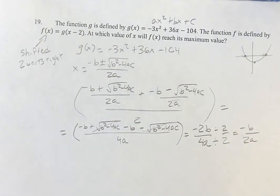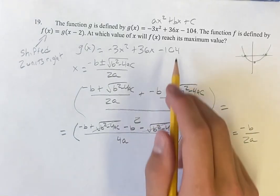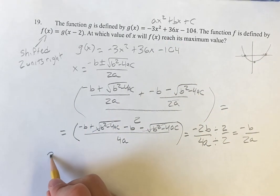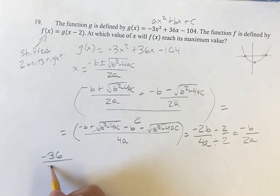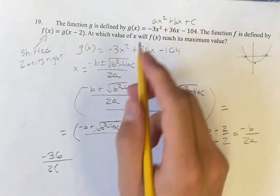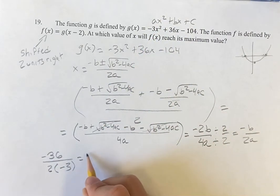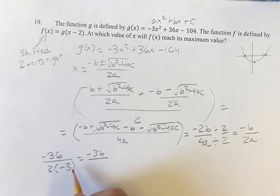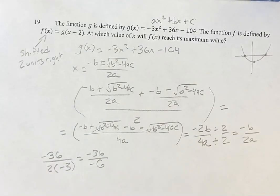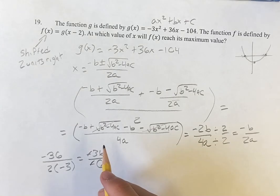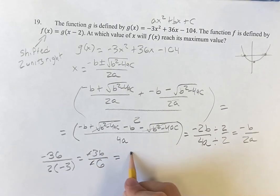So what is that going to be? So for b, that's going to be 36. So it's going to be 36 negative over 2 times a is negative 3. So it's going to be negative 36 over 2 times negative 3 is negative 6. Negative signs cancel out. 36 divided by 6 is 6.